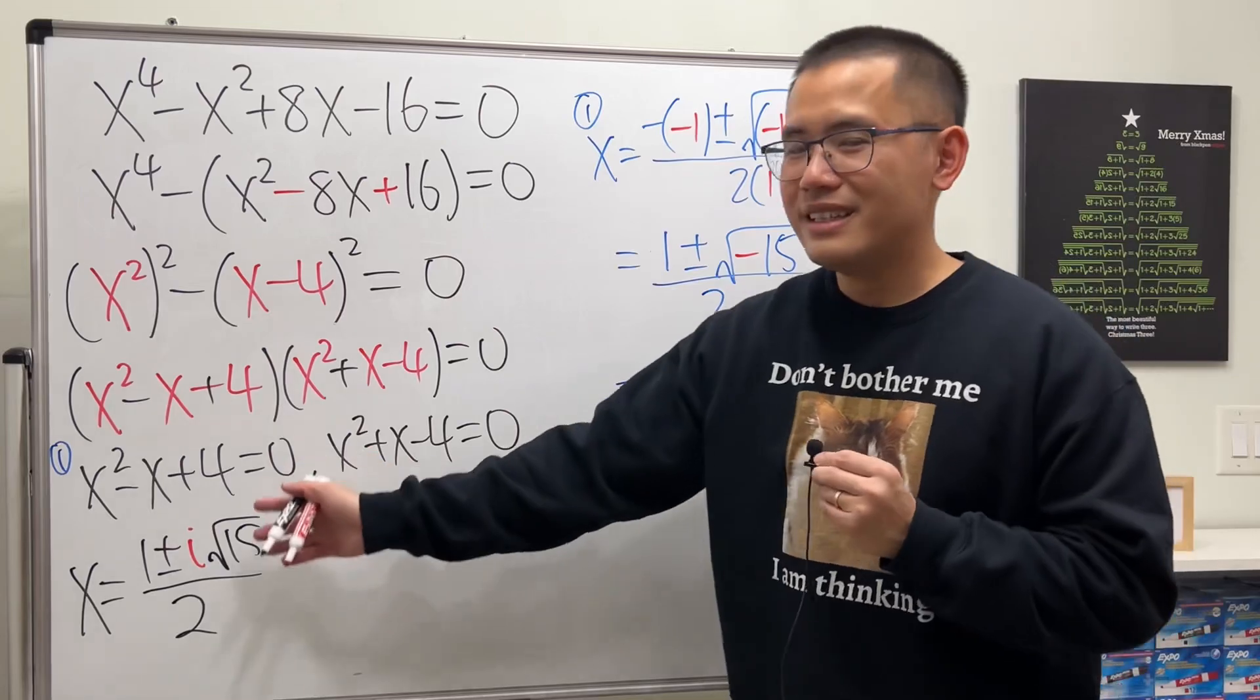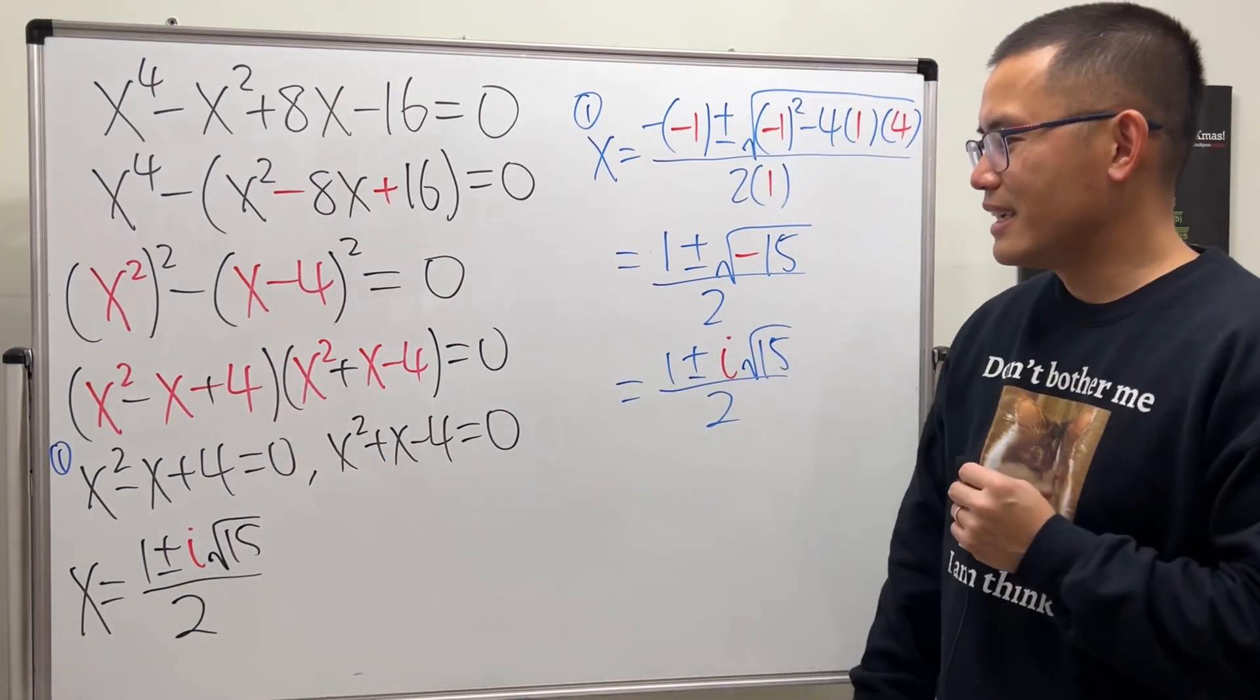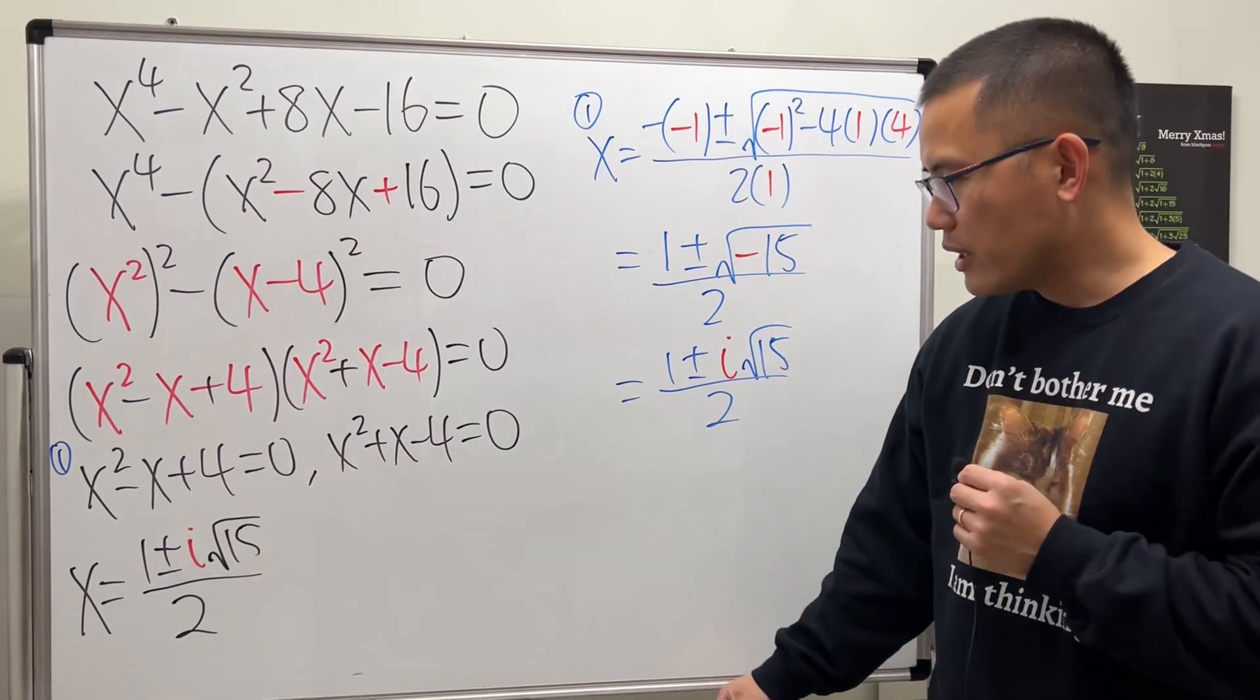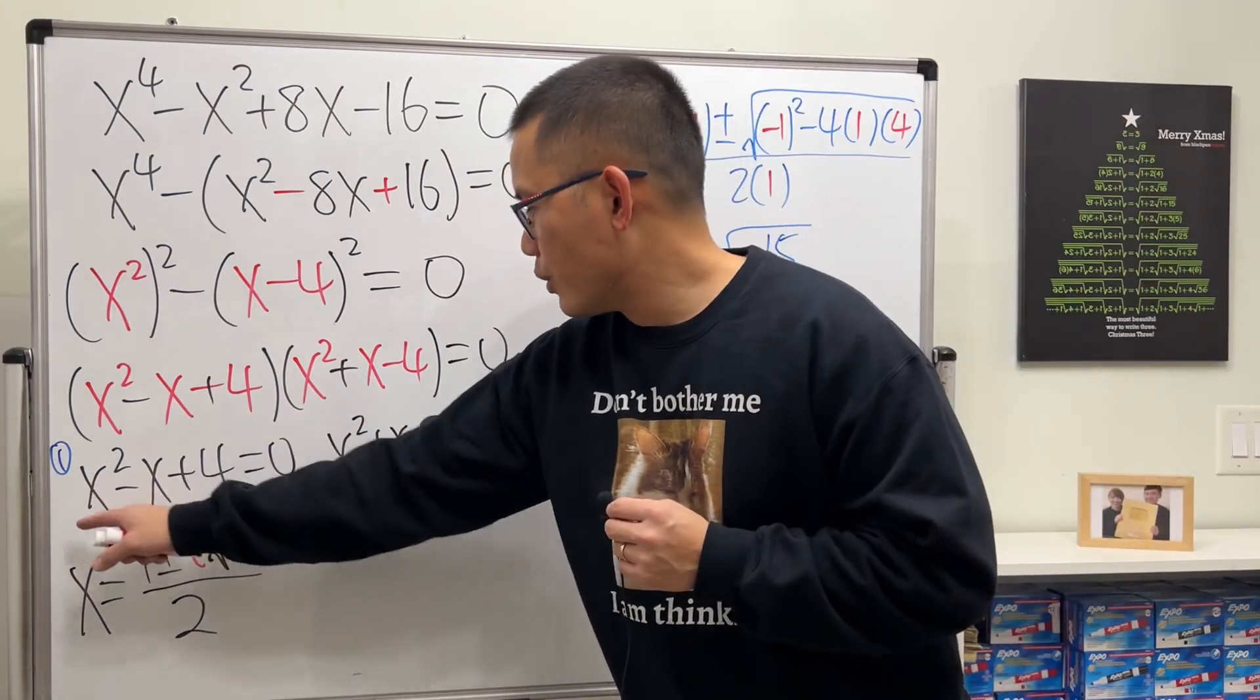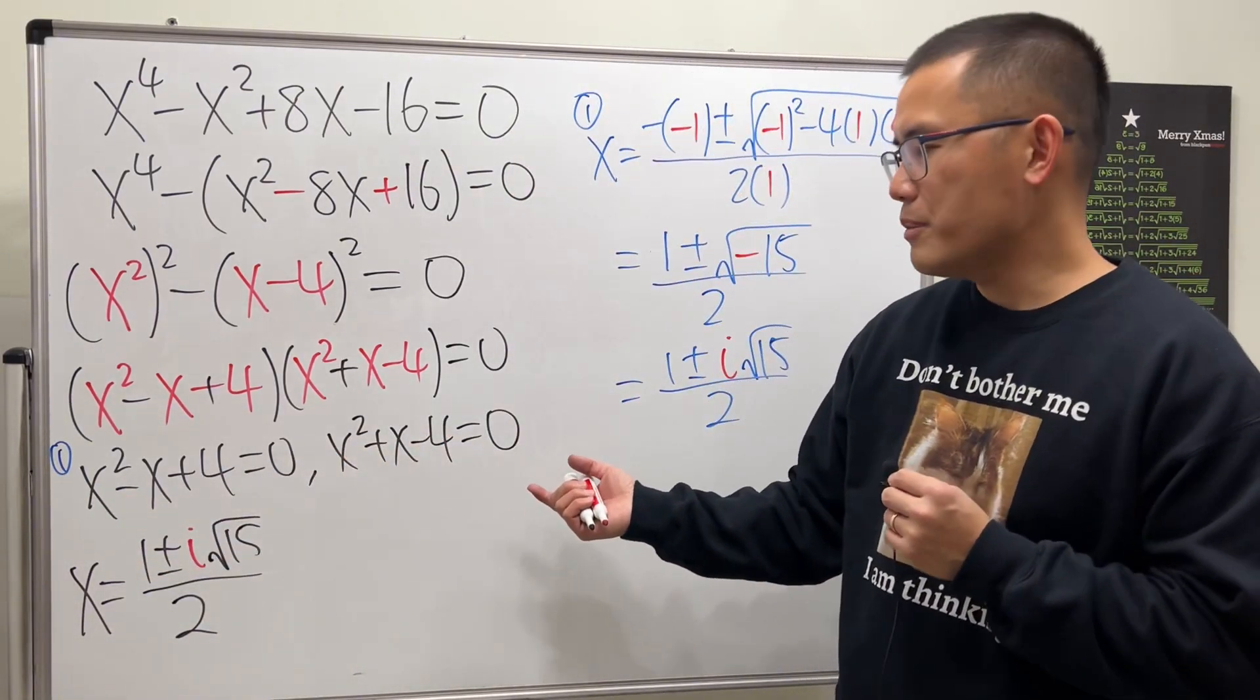And as you can see, these two are not real solutions: 1 plus or minus i√15 all over 2. And for the second equation, notice the coefficients are almost the same.